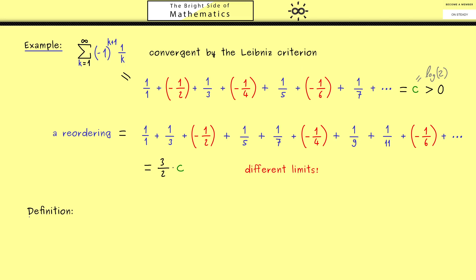Let's finally fix the definition of a reordering. Take a series and a map tau that goes from the natural numbers into the natural numbers and is bijective. If you have another index set, you would change the natural numbers into this index set.